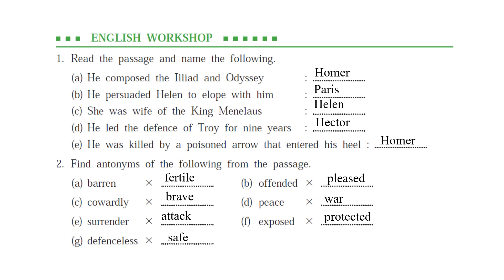Question number 2: Find antonyms of the following from the passage. Barren — opposite is Fertile. Cowardly — opposite is Brave. Surrender — opposite is Attack. Defenseless — opposite is Safe. Offended — opposite is Pleased. Peace — opposite is War. Exposed — opposite is Protected.